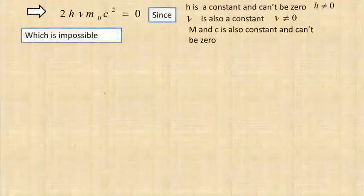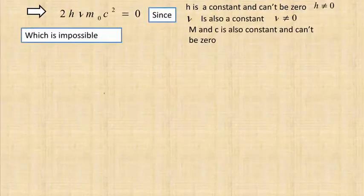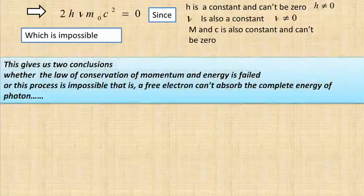This result is impossible because h (Planck's constant) cannot be zero, ν (the frequency) cannot be zero, and m₀ (the rest mass of the electron) cannot be zero. Therefore, the expression 2hνm₀c² = 0 is a contradiction.